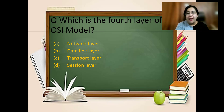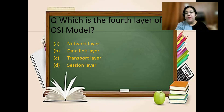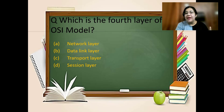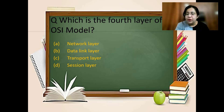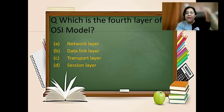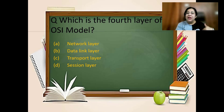On the top of the OSI model is the application layer, then the session layer, then the presentation layer, then the transport layer. There are 7 layers in total. The fourth layer specifically is what is being asked here. You can count from either the top or the bottom to reach the fourth layer.